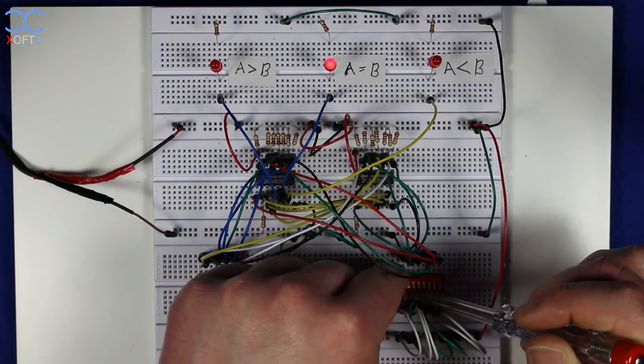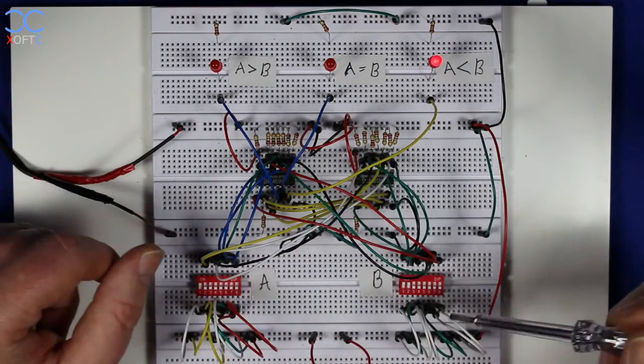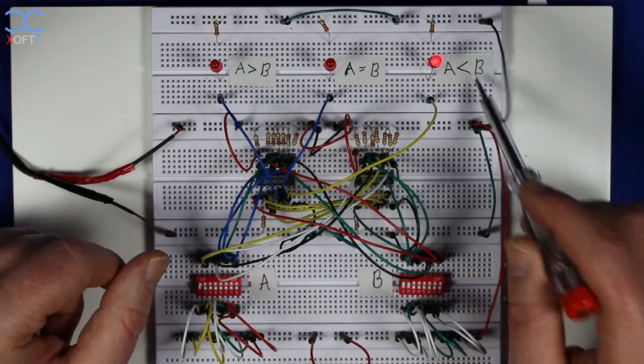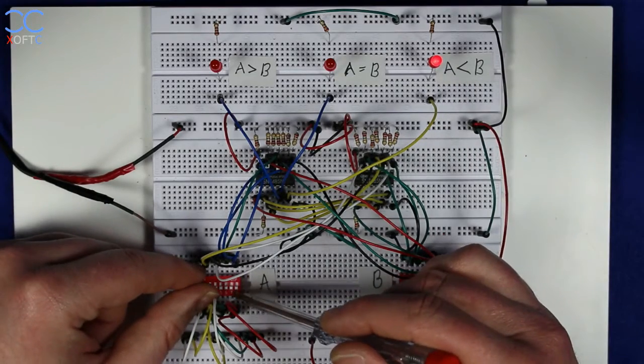And if I set B to 3, so raising the second bit, then we can see that A is smaller than B, and that goes for all values.